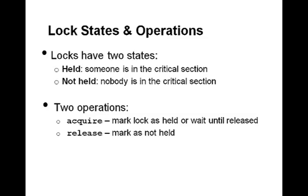First of all, let's learn what a lock is. A lock is an operating system structure that has two states. It can be held — this represents the case when a thread is in a critical section and no one else should enter — or not held, which means the critical section is not currently in use and a thread can enter the critical section. To represent these two states, there are two operations to move the lock between the states.